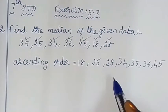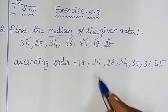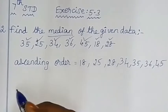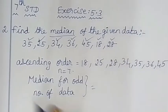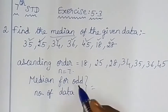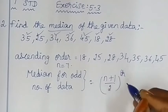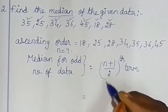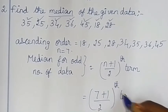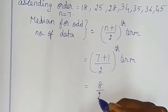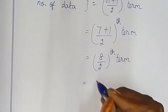7 is an odd number, so the median is the middle number. The formula for odd number of data is (n+1)/2 th term. So median = (7+1)/2 th term = 8/2 th term = 4th term.